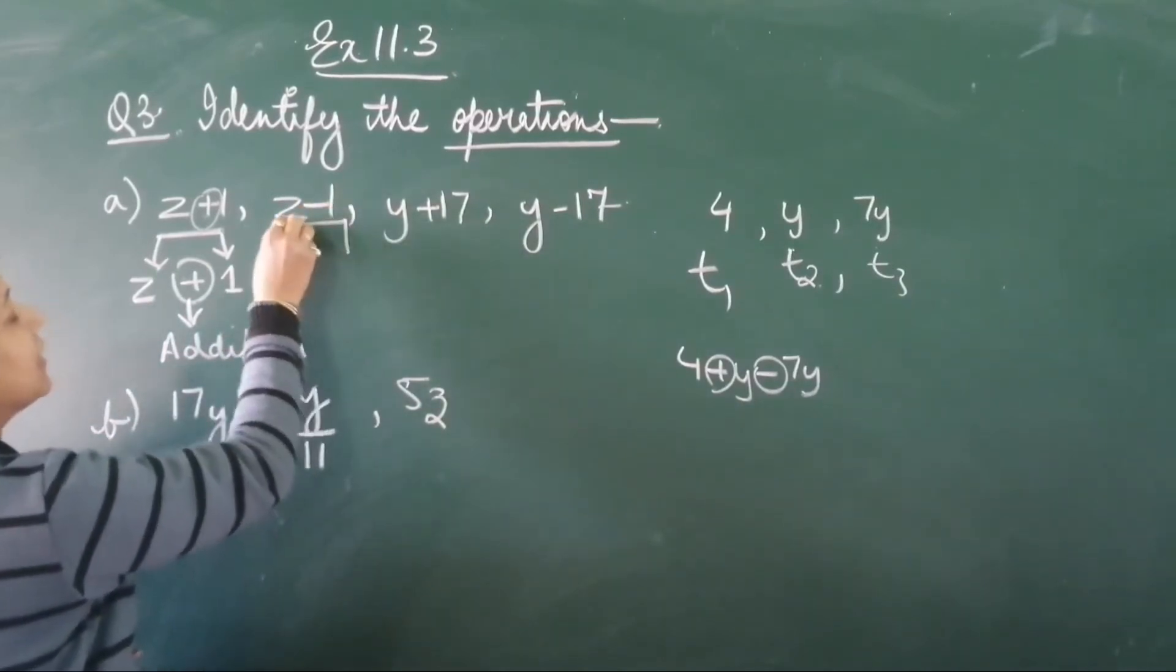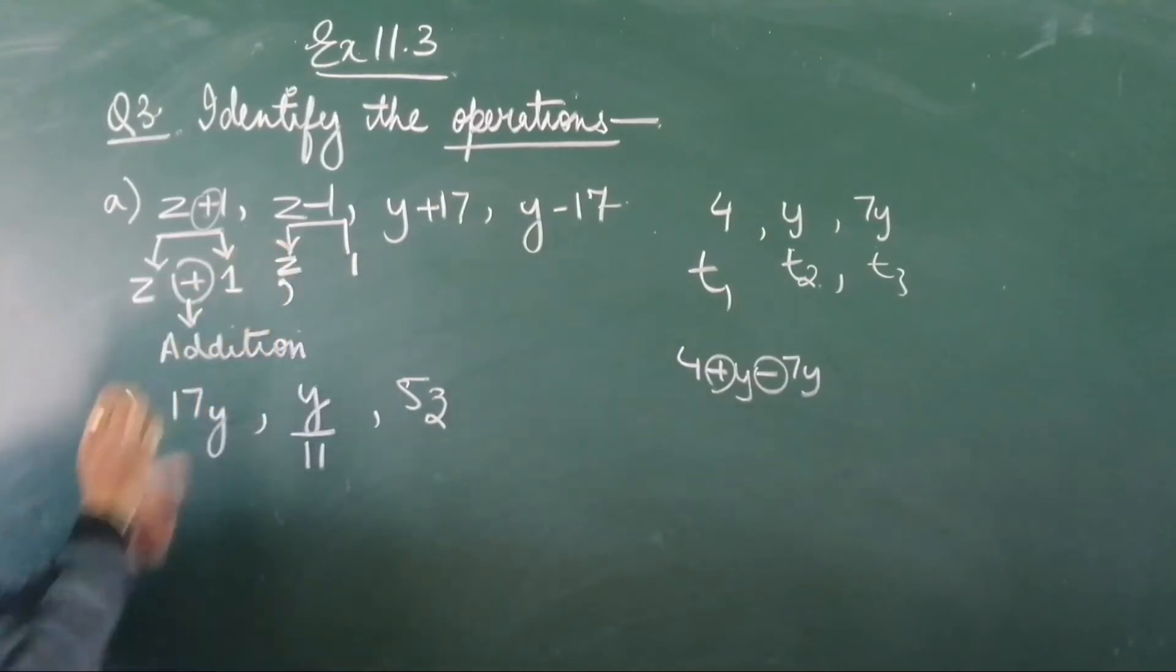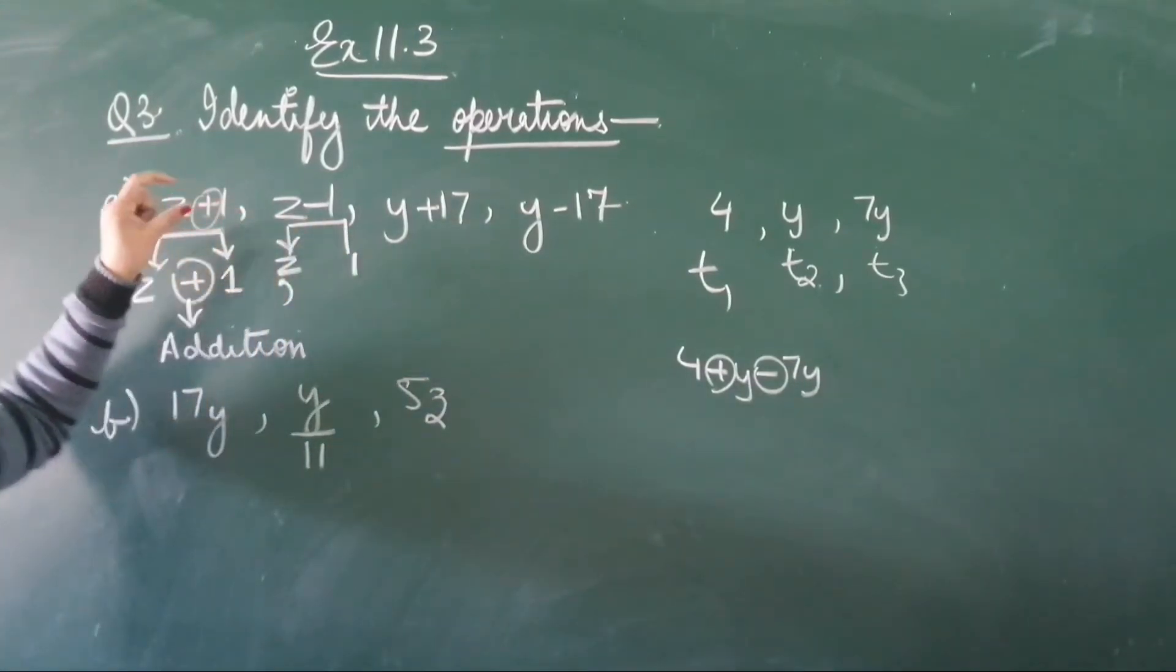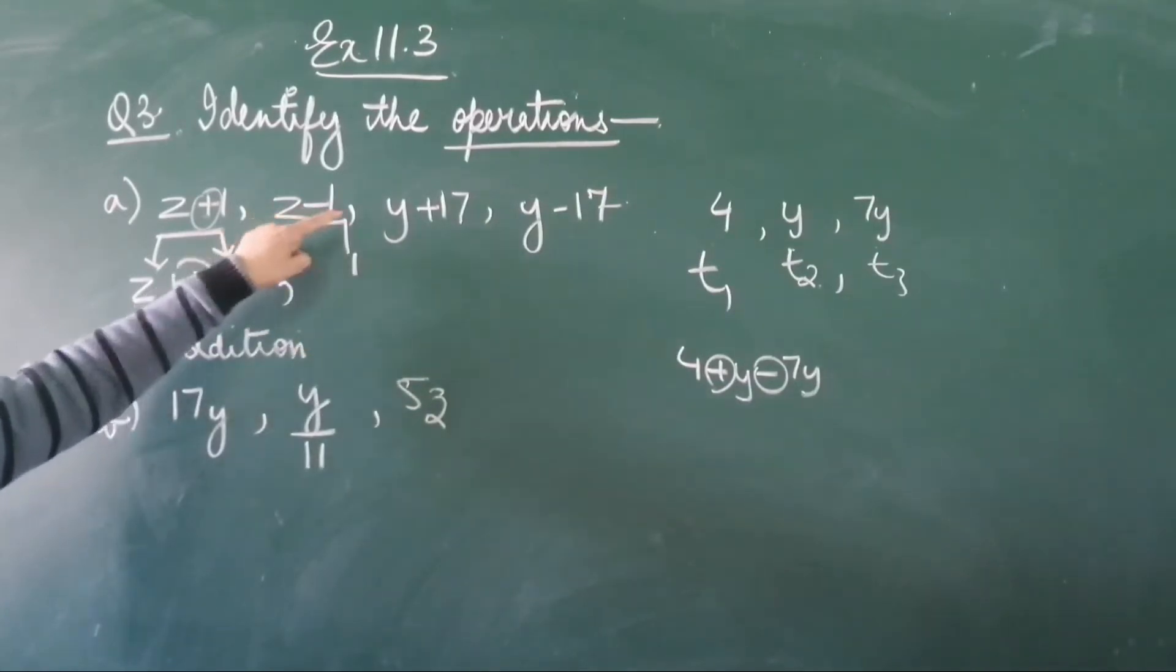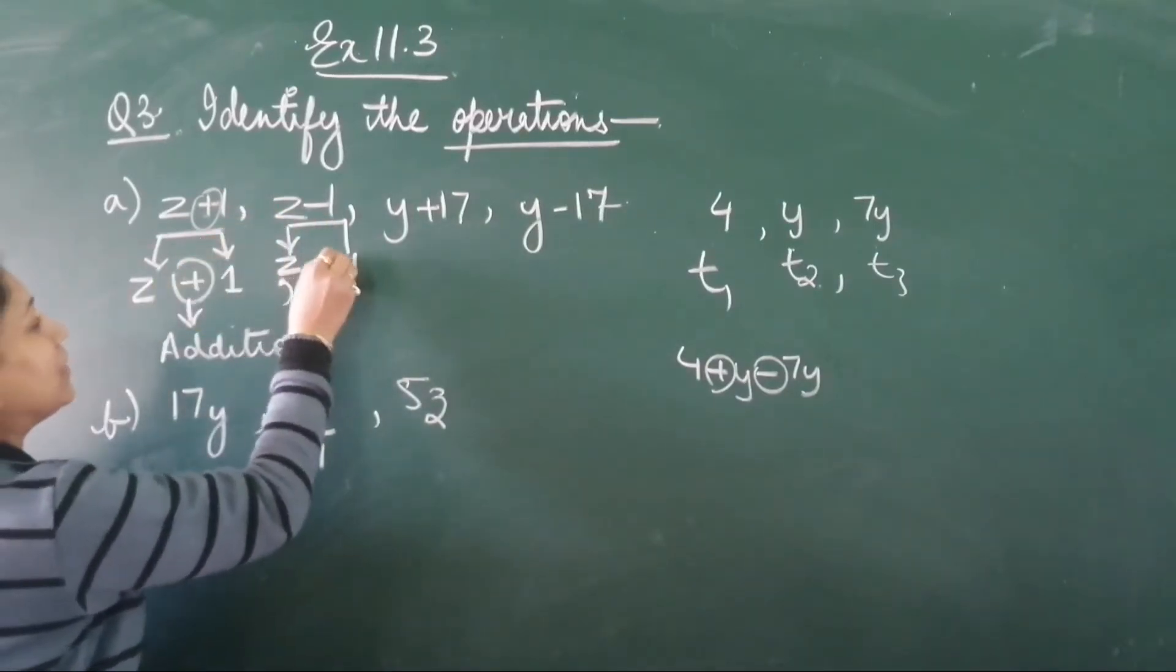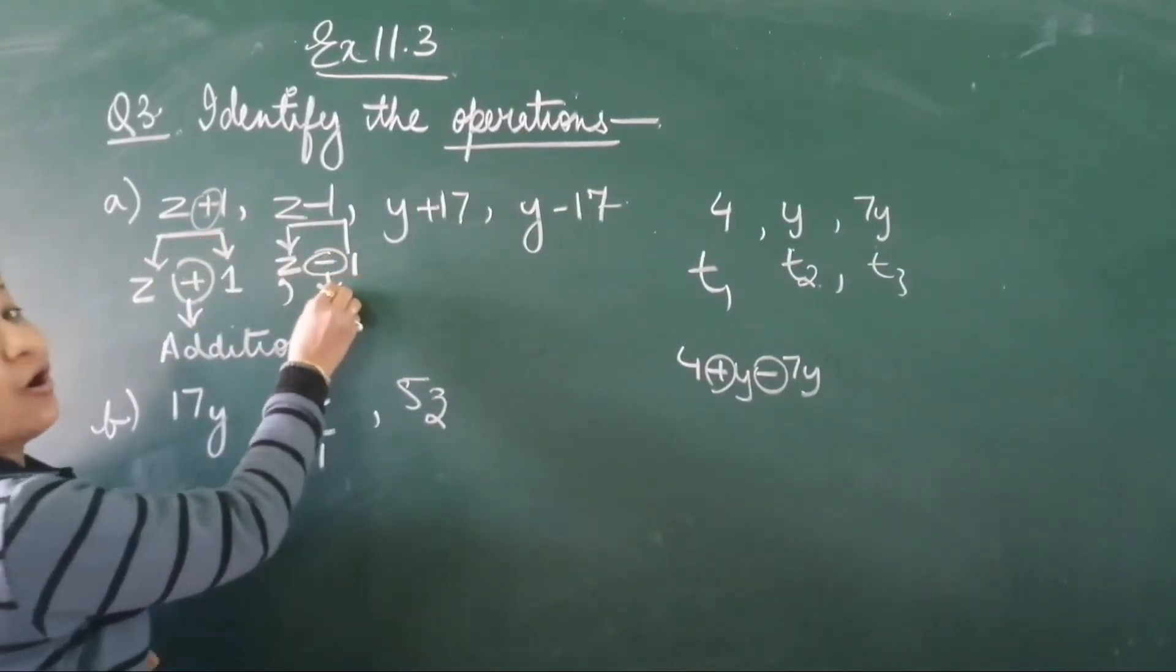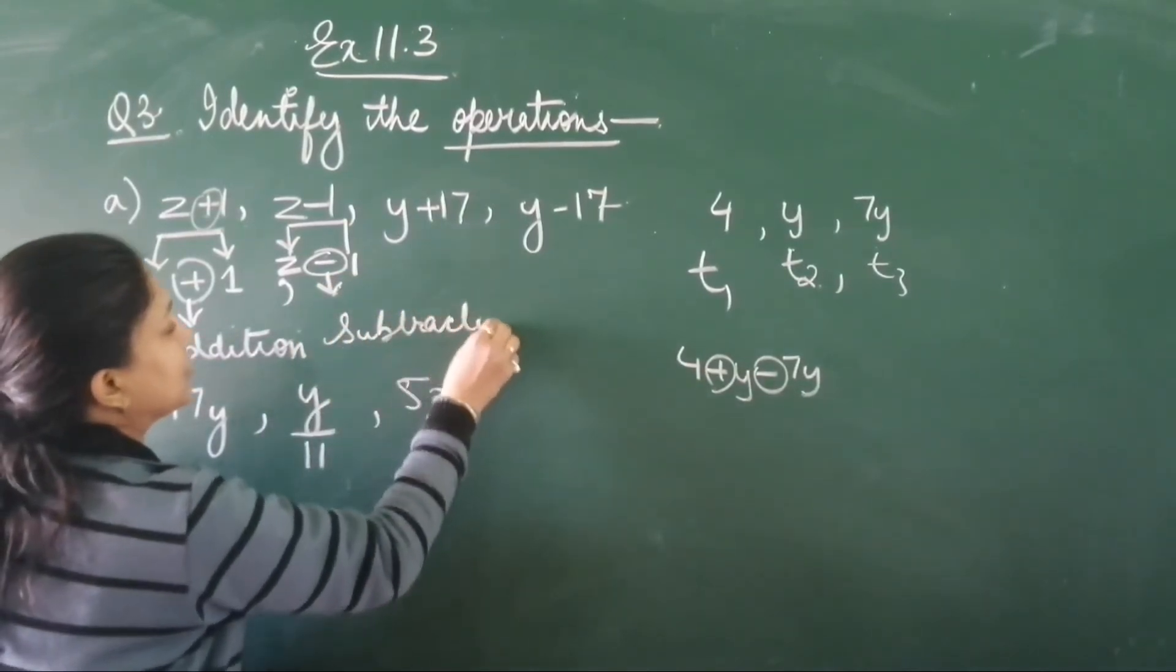Same way, z minus 1 - z and 1, these are two terms. Only variable and only number. With these two terms, what they have done? They have subtracted 1 from z. So this minus is the operator used for subtraction.